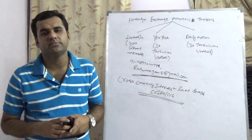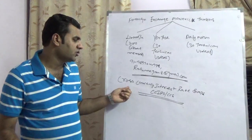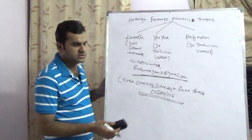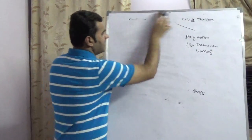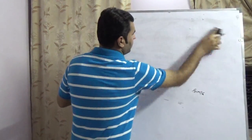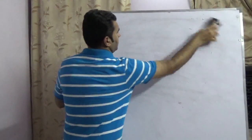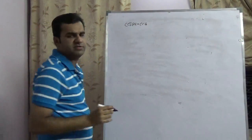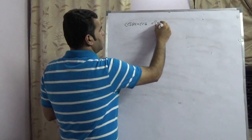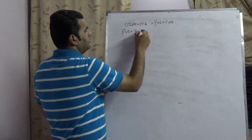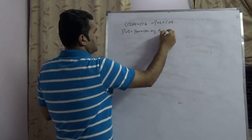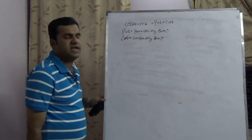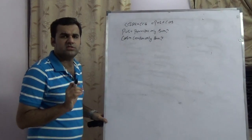We are going to speak about a beautiful topic: cross-currency interest rate swap, which is nothing but the sum of principle only swap and coupon only swap. Some books refer to cross-currency swap as CCS. POS stands for principle only swap, COS stands for coupon only swap, and CCIRS stands for cross-currency interest rate swap. Today we will take an example of how cross-currency interest rate swaps work.